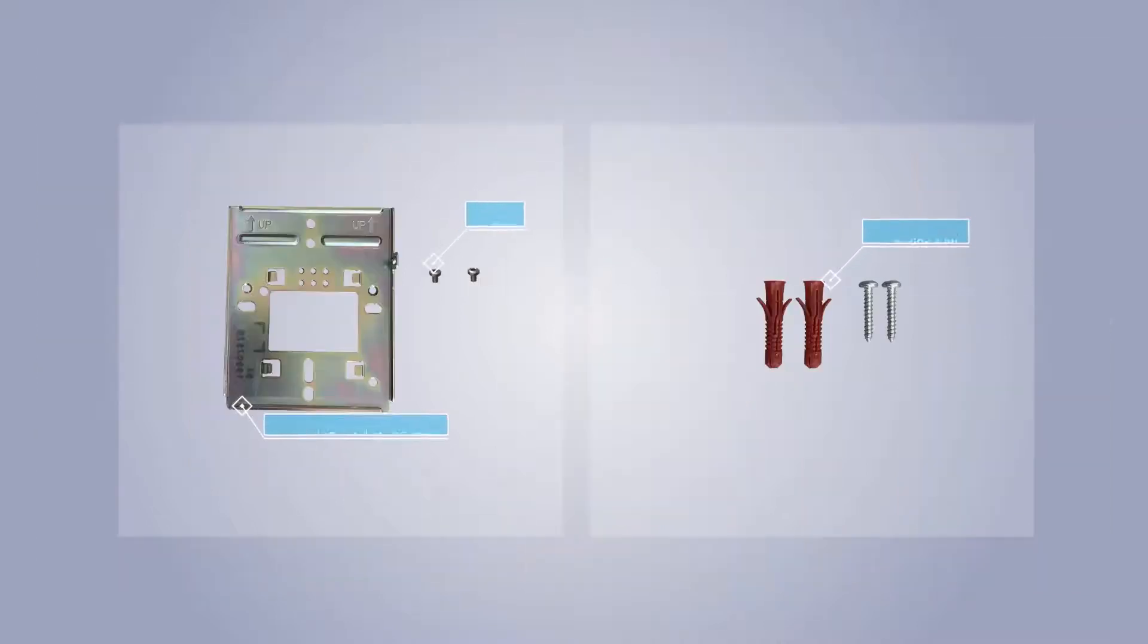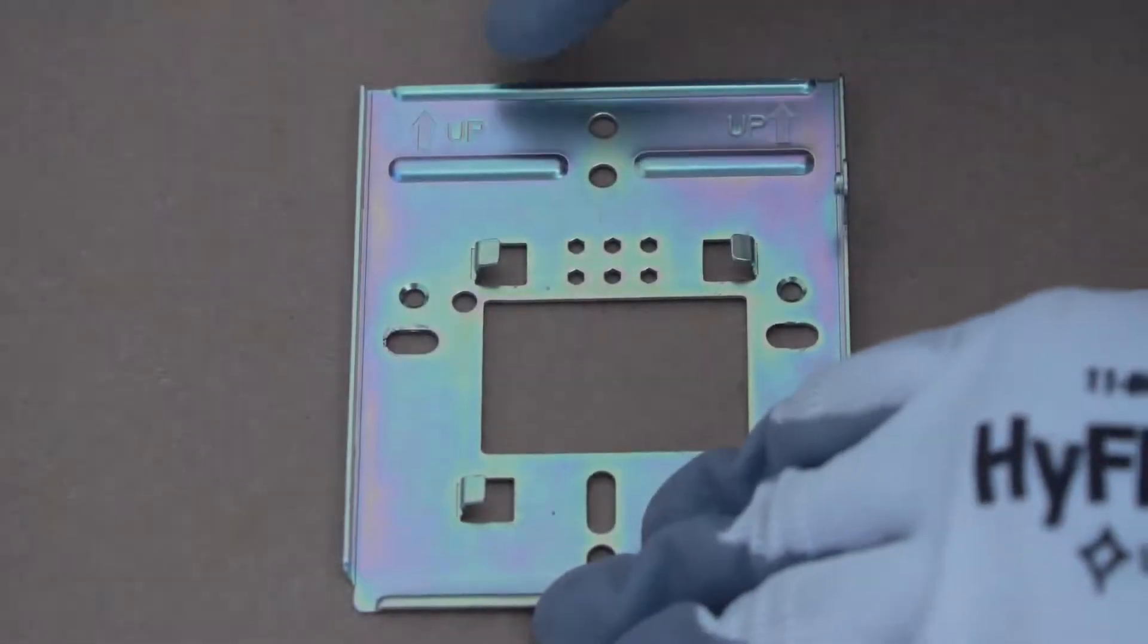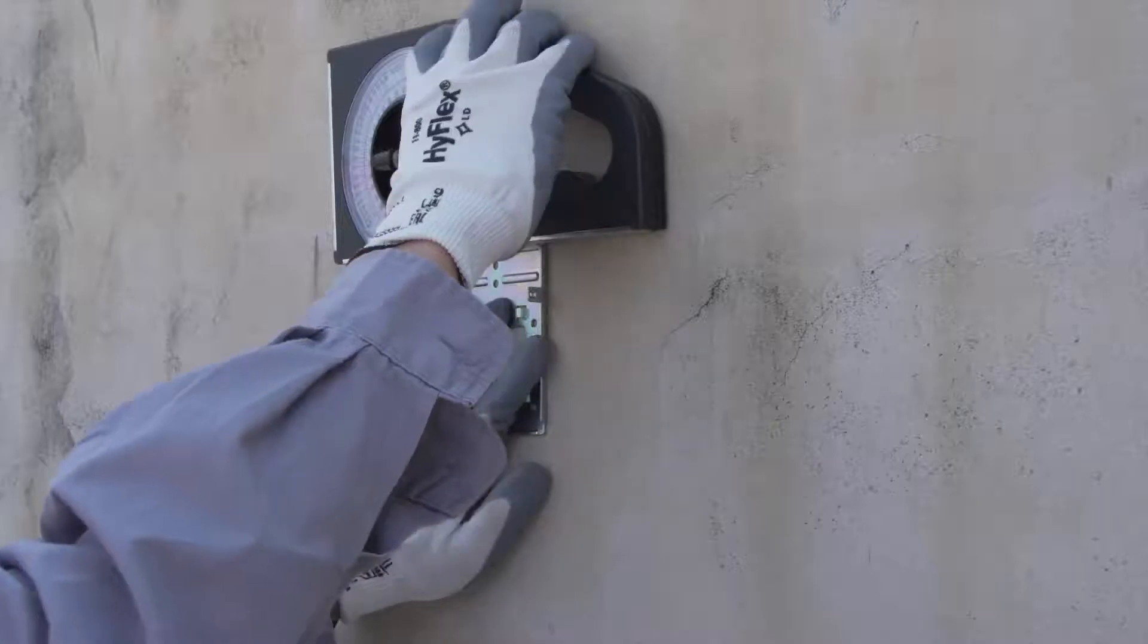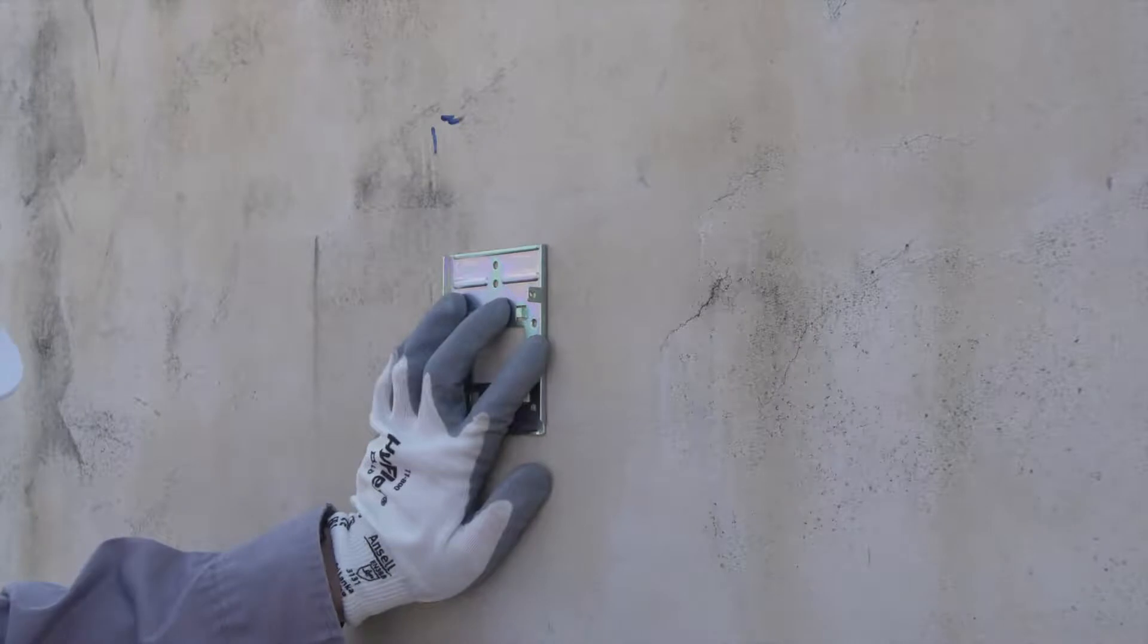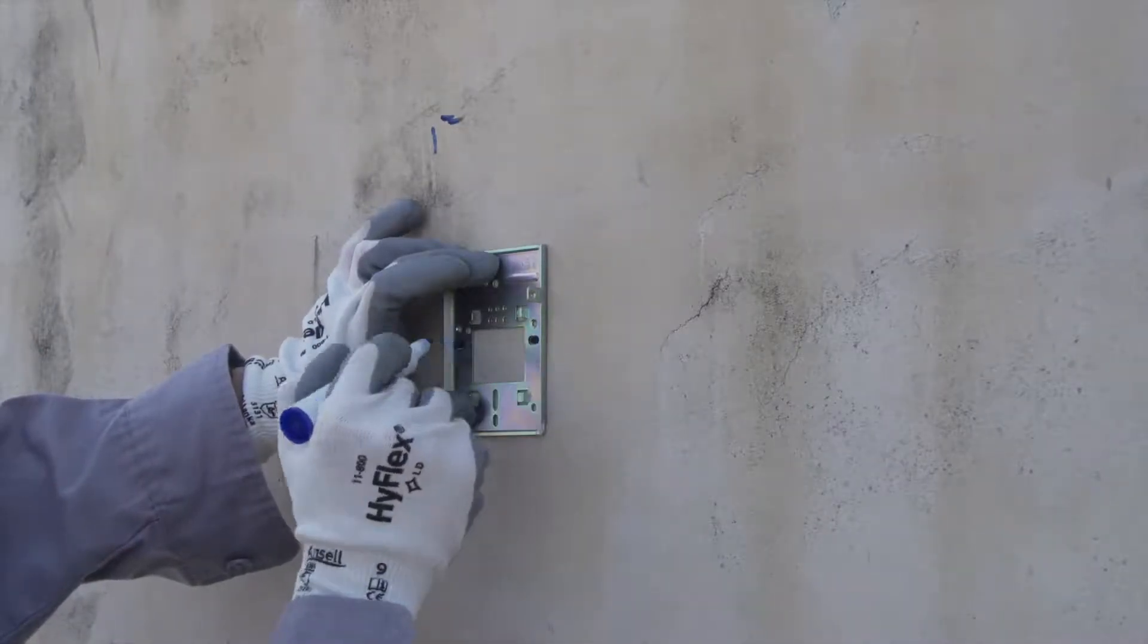In a wall mounting scenario, the components and tools displayed above are required. Mark the mounting hole positions on the wall with the marker. A level instrument can be used to help mark the holes to ensure equilibrium.